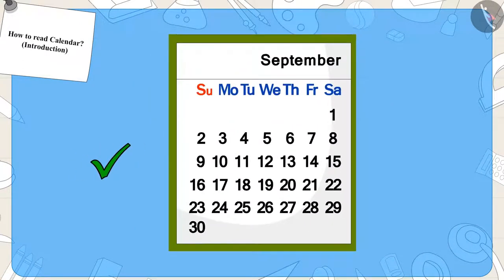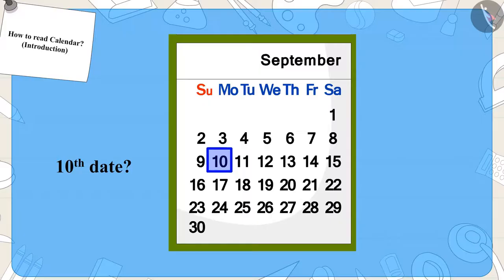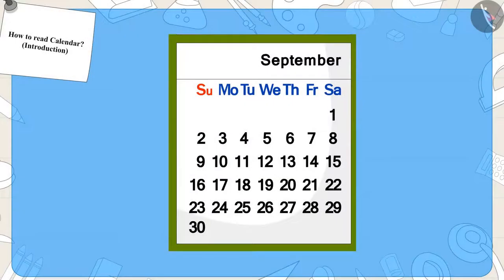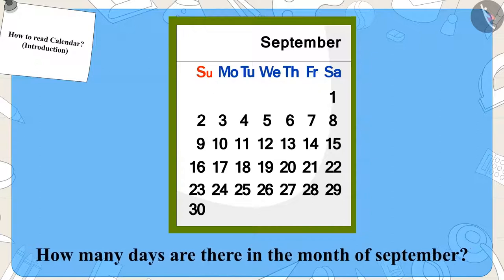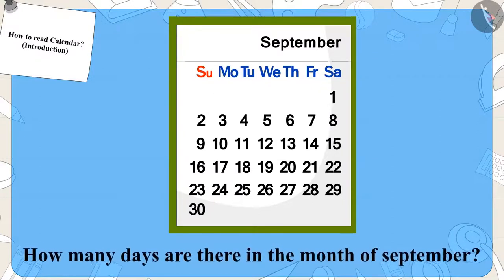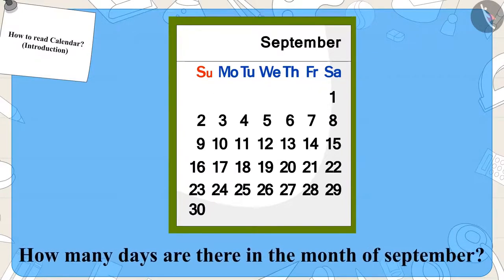Now, can you find the date 10 in here? That's great, you got the date right! Children, can you tell how many days are there in the month of September? That's right — 30 days!